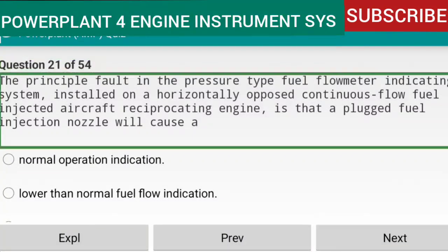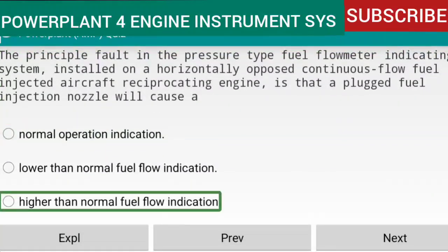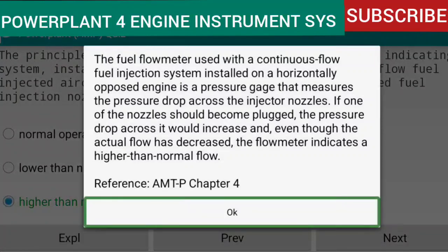Question 21 of 54: The principal fault in the pressure-type fuel flow meter indicating system installed on a horizontally opposed continuous-flow fuel-injected reciprocating engine is that a plugged fuel injection nozzle will cause a higher than normal fuel flow indication. The fuel flow meter measures the pressure drop across the injector nozzles. If one nozzle becomes plugged, the pressure drop increases, and even though actual flow has decreased, the flow meter indicates a higher than normal flow. Reference: AMTP Chapter 4.